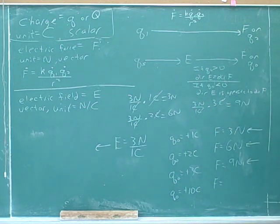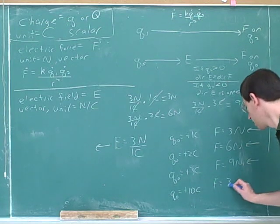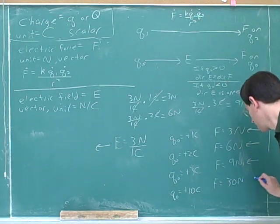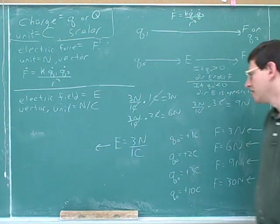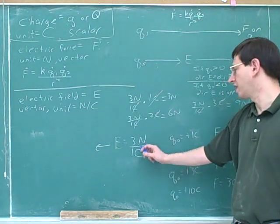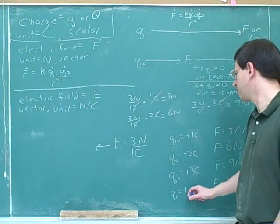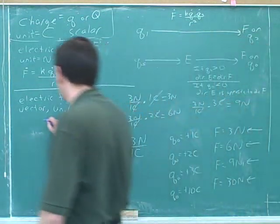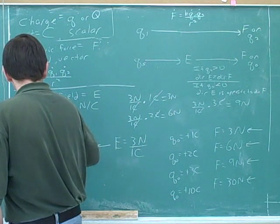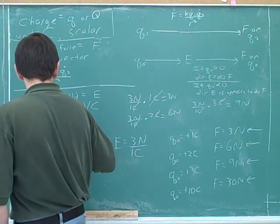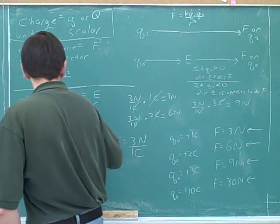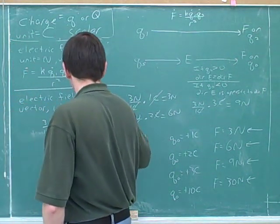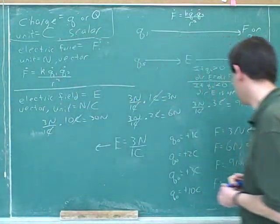How about if we had a positive ten-Coulomb charge? Thirty newtons to the left. If one Coulomb gets three newtons, and you have ten times as much charge, you should get ten times as much force. Or mathematically: three newtons per Coulomb times ten Coulombs is thirty newtons.